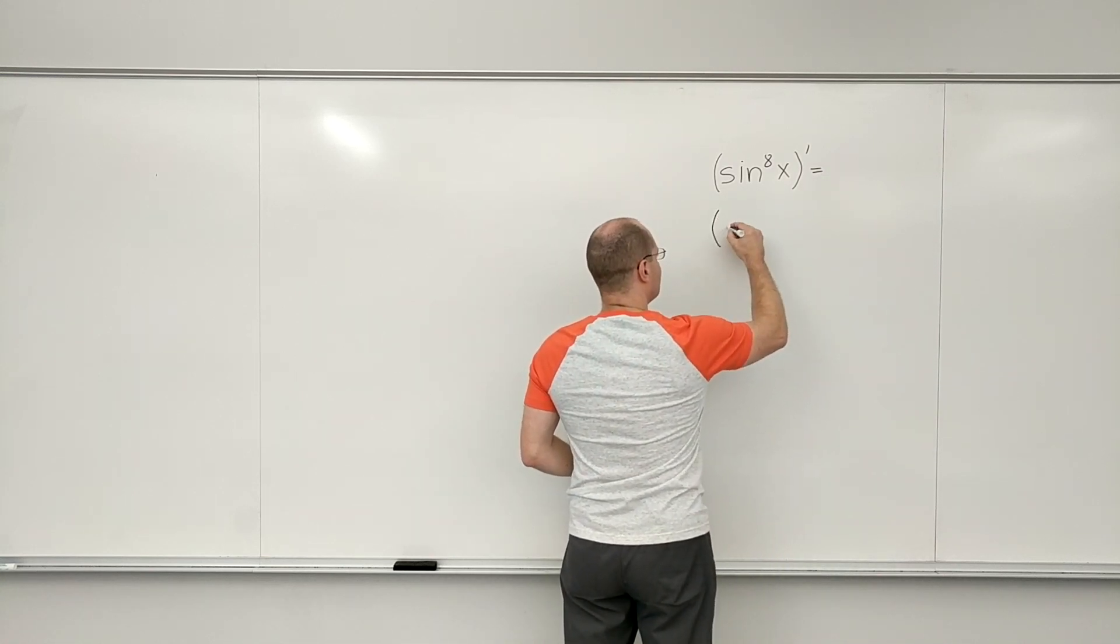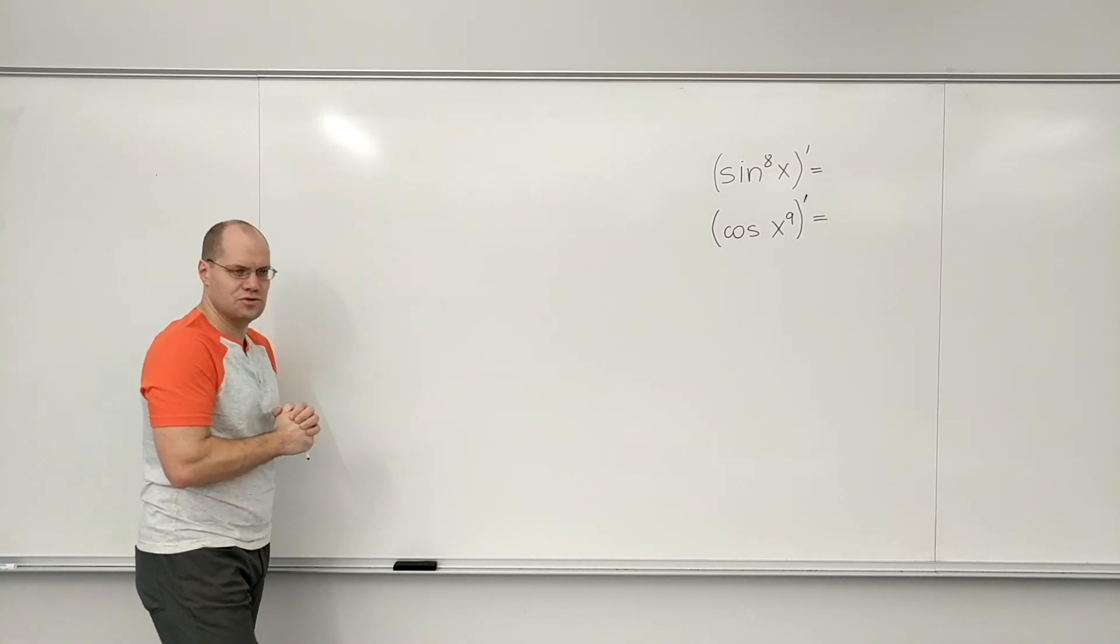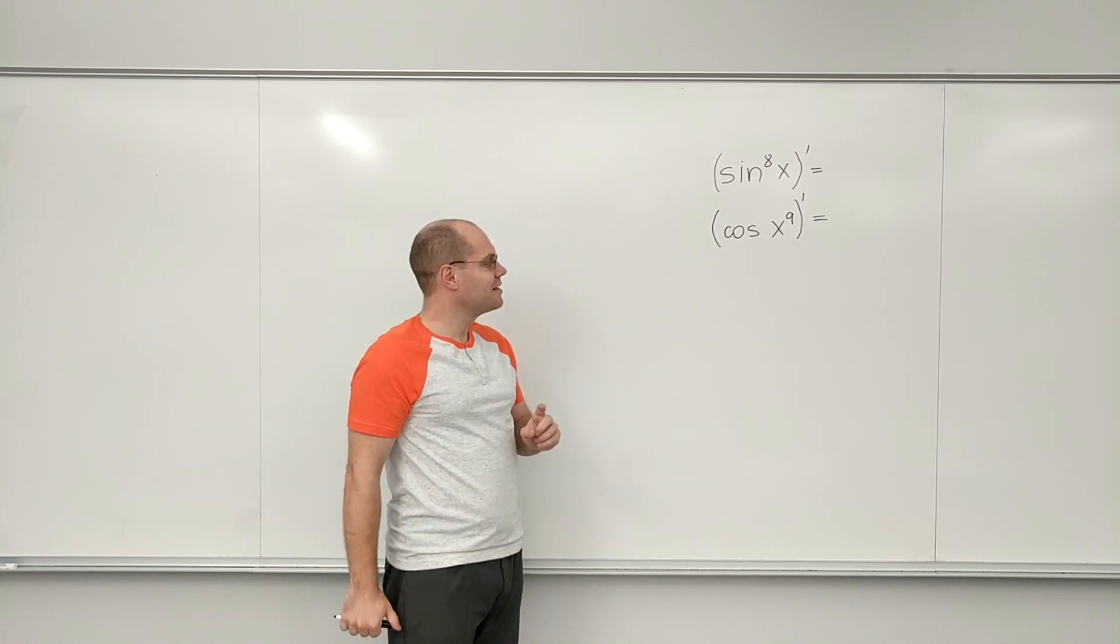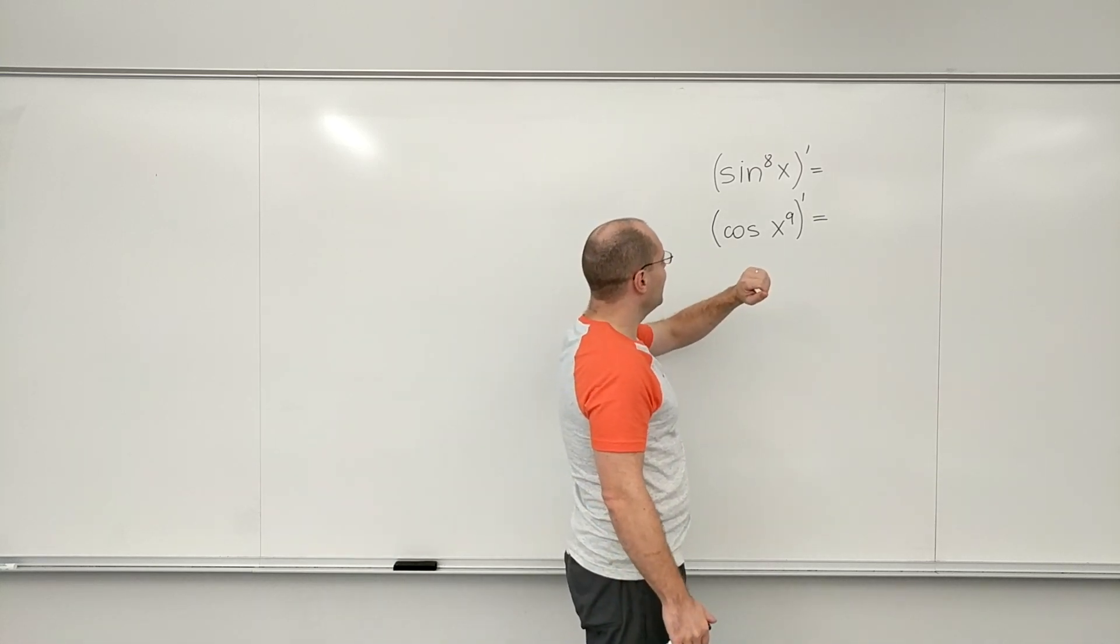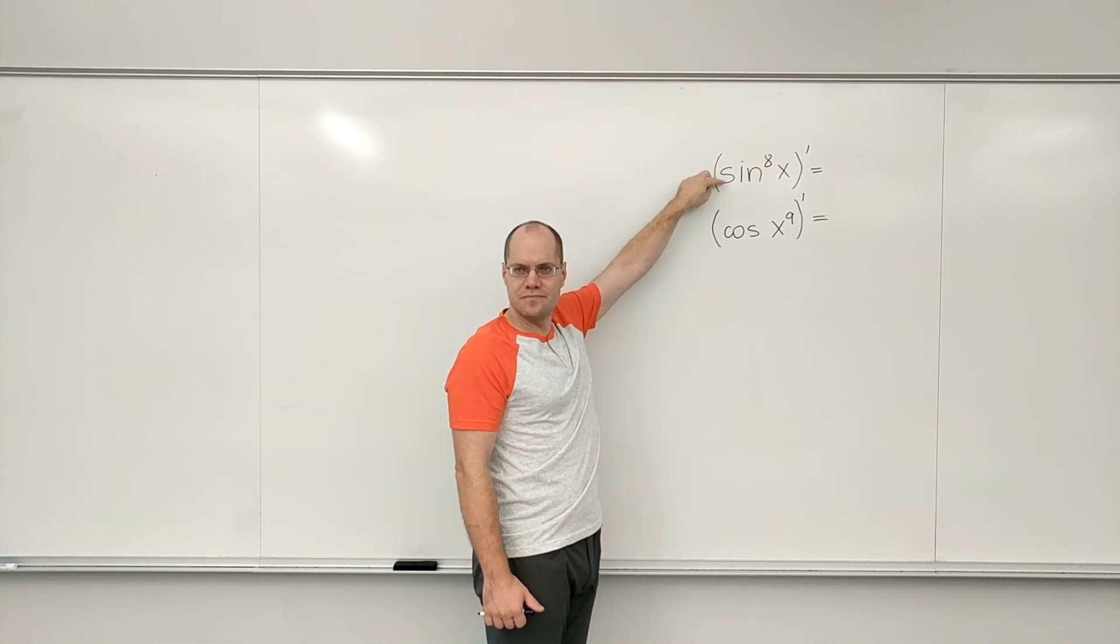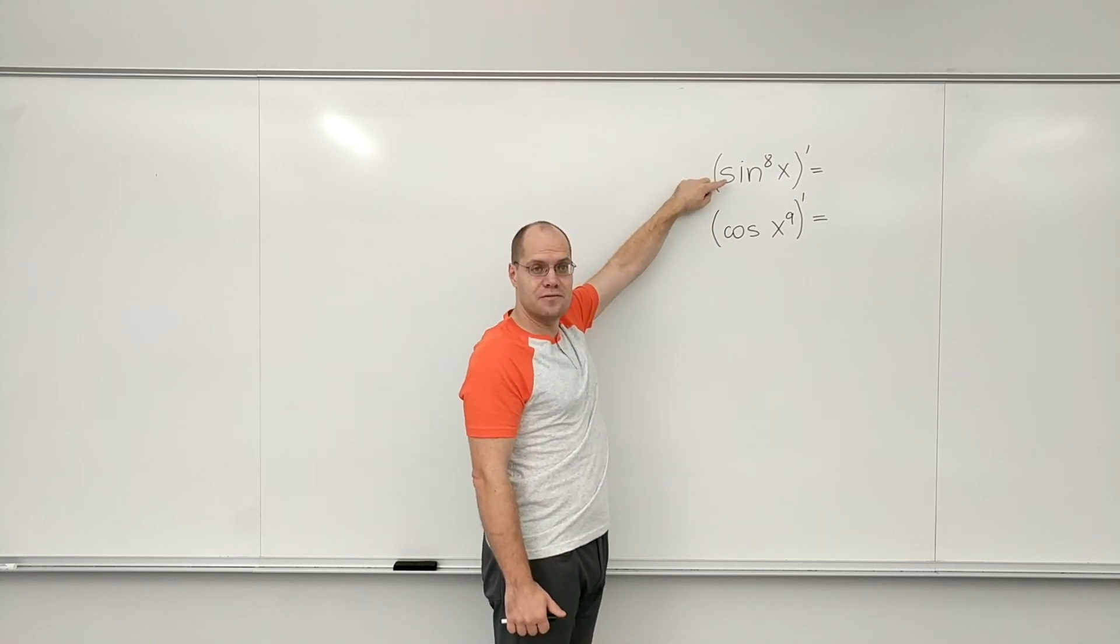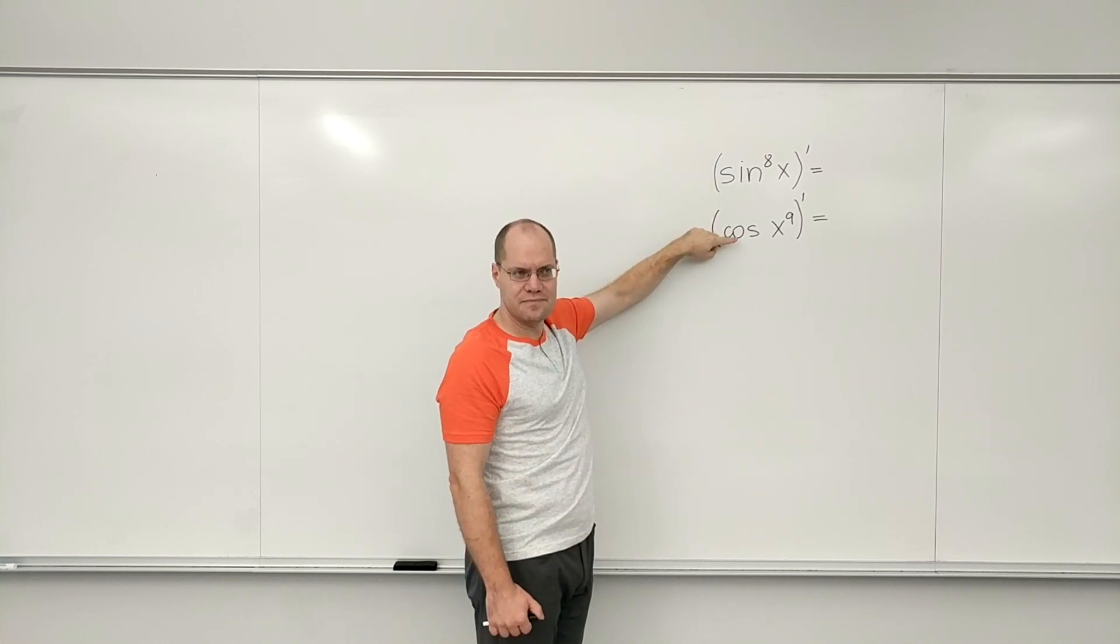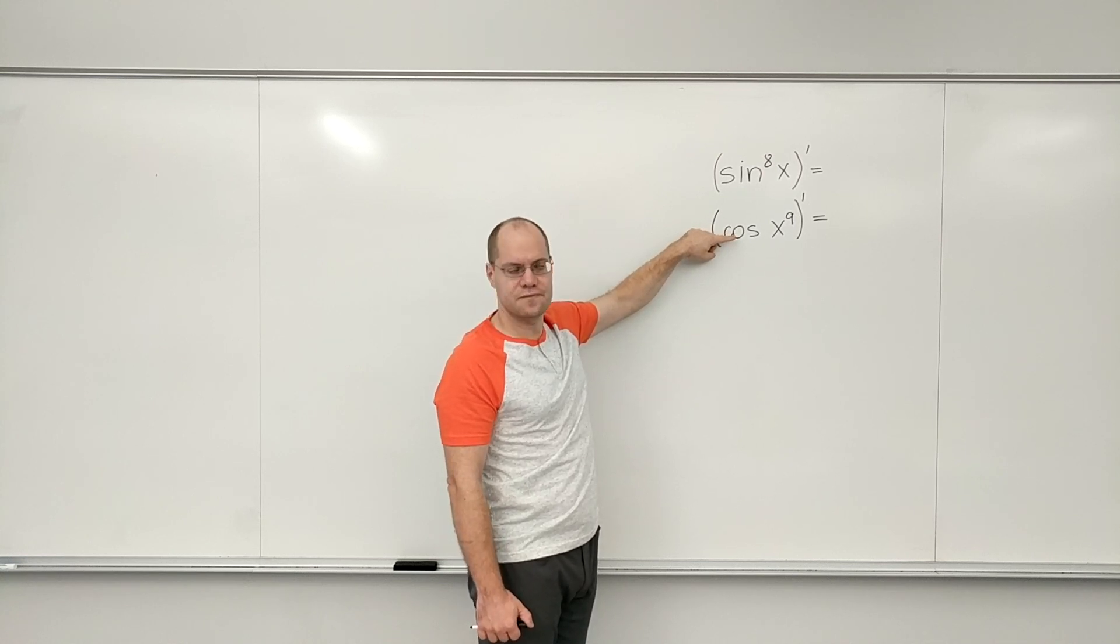And also, I'll give you 30 seconds to do this, although you should be able to do it more quickly. Okay, so remember that the key to doing the chain rule right is to look at a function and name it with one word. So this is a power, this is a cosine, this is a power—power 8, power of sine of x. This is the cosine of x to the ninth power. So very different functions.